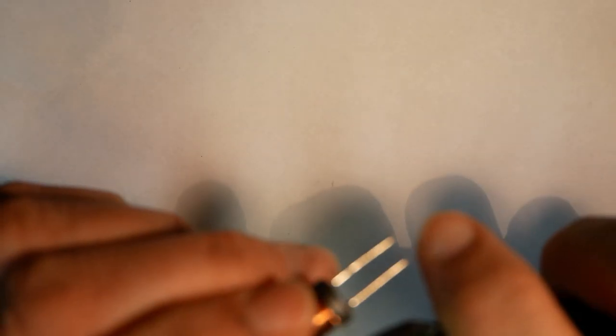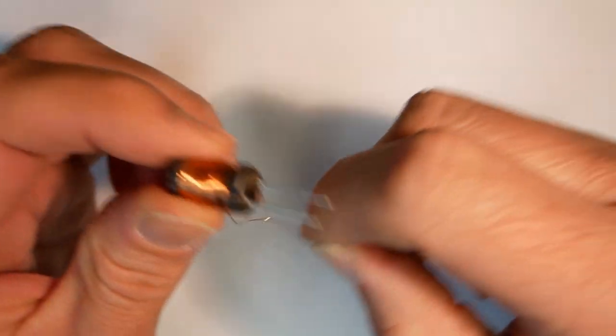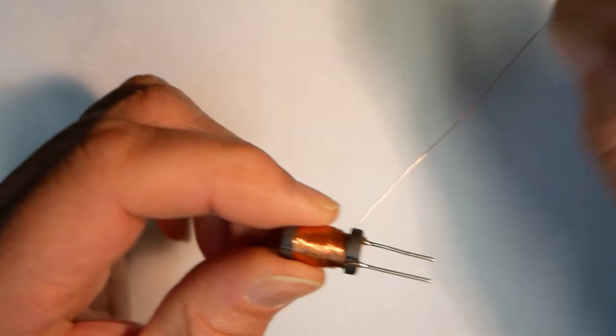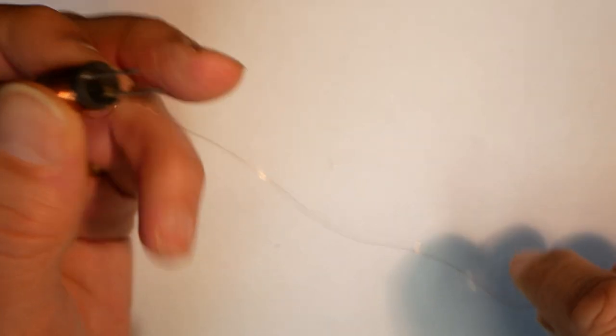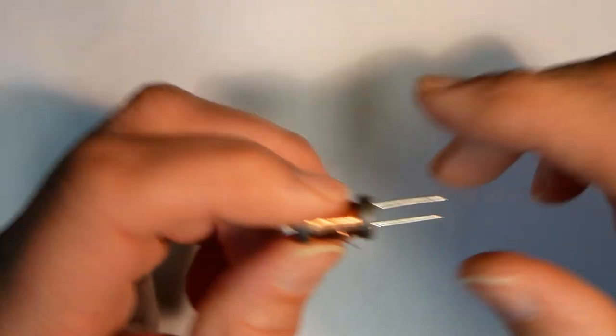I'll just disconnect that. So, basically lots and lots of wire coiled around the ferrite core. And then the ends of the wire are then soldered to the legs. So, anyway, let's see how this actually works.